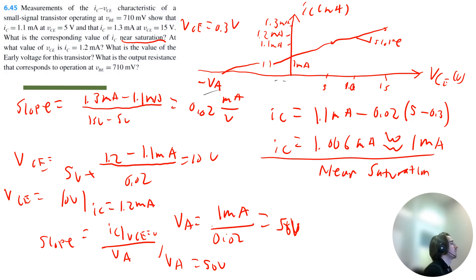And last question. What is the output resistance that corresponds to operation at VBE equals 710 millivolts? Turns out you don't even need that VBE information because you can calculate output resistance by taking VA and dividing it by capital IC. This just corresponds to the current when VCE equals 0. So basically it's this y-intercept. So that's going to be 1 milliamp. So output resistance is 50 volts divided by 1 milliamp, which is 50 kilohms. And that solves all of the questions from this problem.